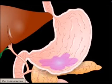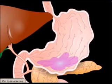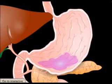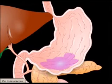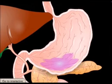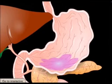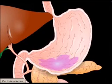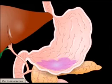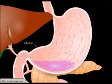Muscular contractions in the stomach churn its contents to further break down the bolus, and mix it with stomach secretions to form a thick liquid called chyme.